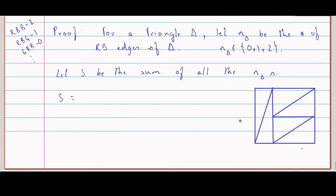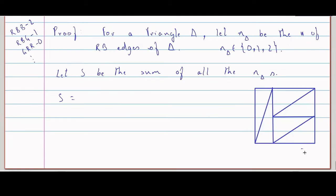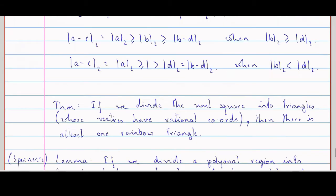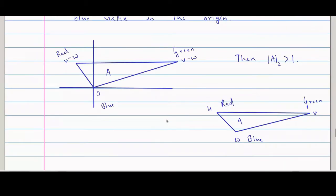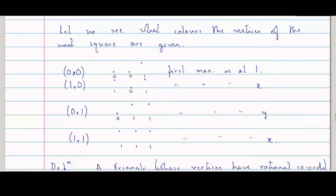Let's assume it's a square and I have divided it into triangles. Now, for the unit square we know: the origin should have blue, this will be red, red, and green. The origin has first maximum at 1, so this will be blue. The x-coordinate point is red, the y-coordinate point is green, and (1,1) is again red. So let's fix those colors for the unit square.